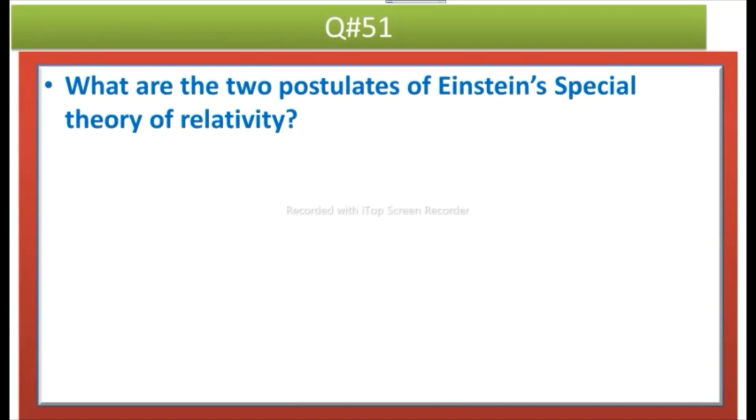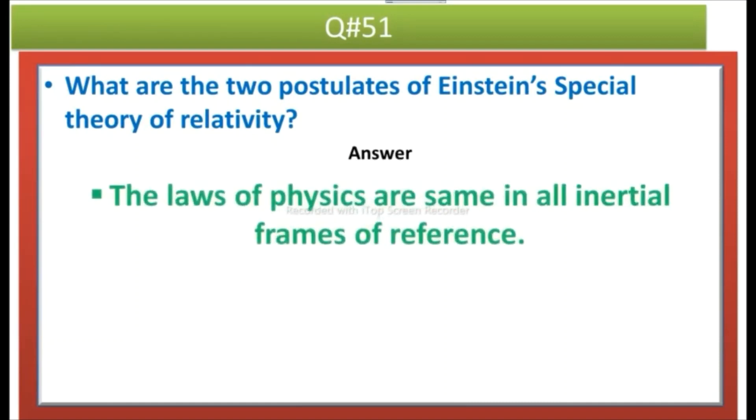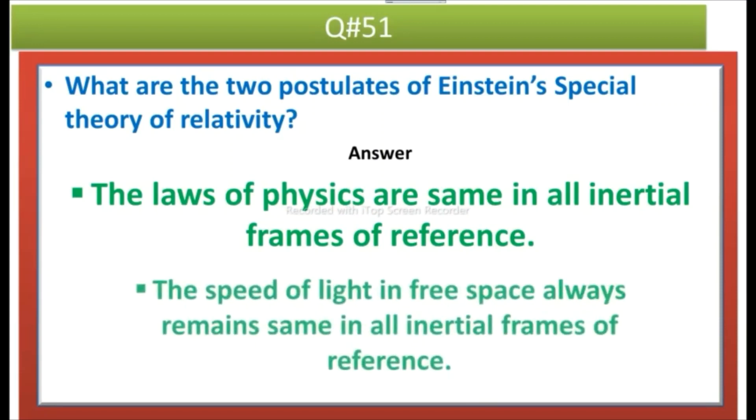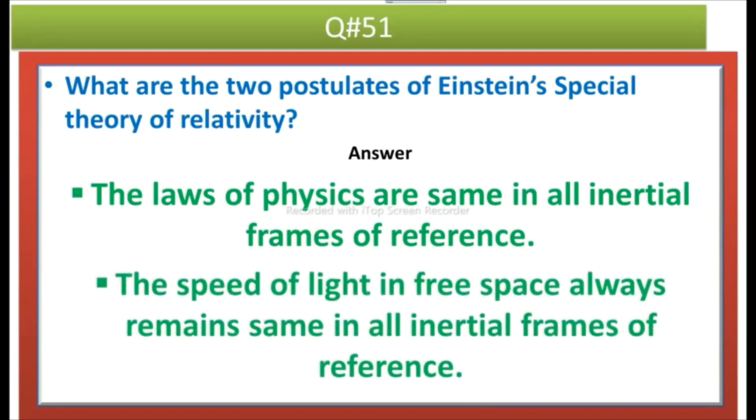What are the two postulates of Einstein's special theory of relativity? Answer: The laws of physics are same in all inertial frames of reference. The next one is the speed of light in free space always remains same in all inertial frames of reference.